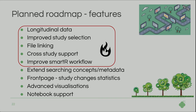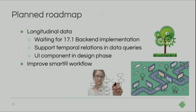Features planned further into the future include: extended searching capabilities to also search for concepts and metadata, a front page showing study statistics, and advanced visualizations such as line graphs and notebook support for adding your own analysis. For longitudinal data, we're waiting for the 17.1 backend implementation extending the REST API to support temporal relations in data queries — the UI component is in the design phase. Improved SmartR workflow means you won't have to save your cohort first; you can make your selection in the cohort panel and go directly to SmartR for analysis.